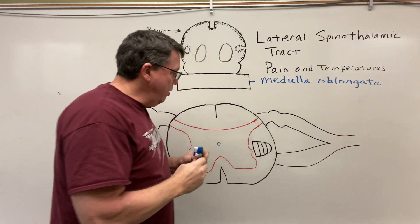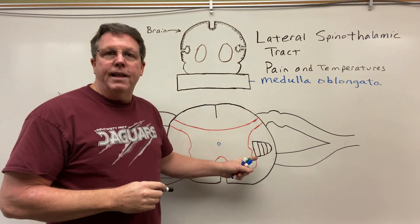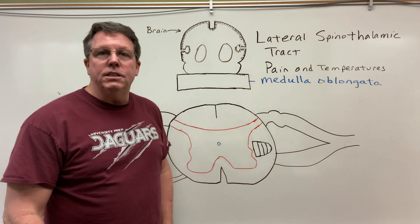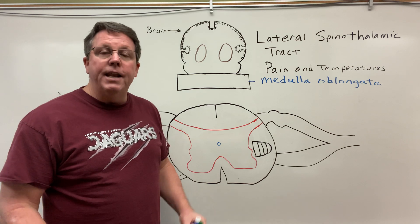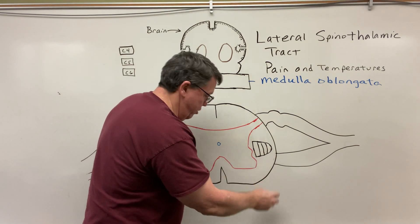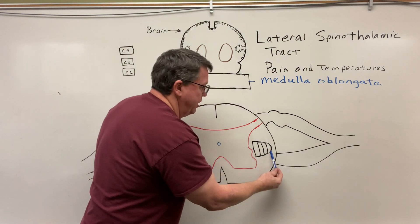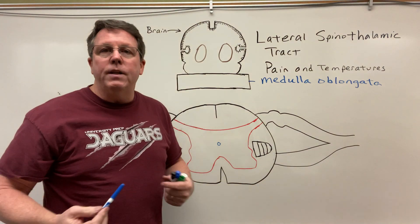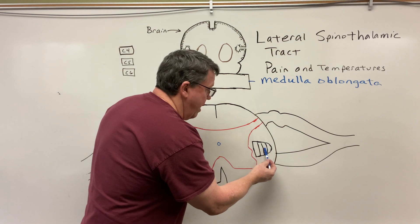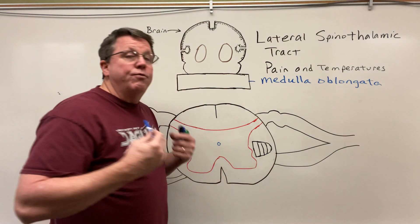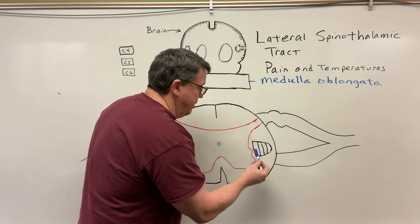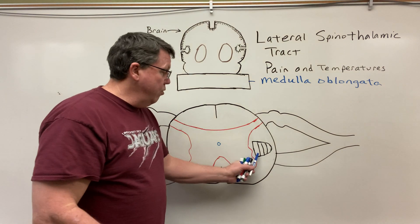You'll notice I have lines in this lateral spinothalamic tract here. What happens is if you get sensations from down lower in your body and they come up and go into the sacrum area, it's going to be more lateral in the tract — you can see it would go to this area right here. Nerves going into your lumbar spine travel right here, thoracic spine nerves travel right here, and cervical spine nerves travel right here.